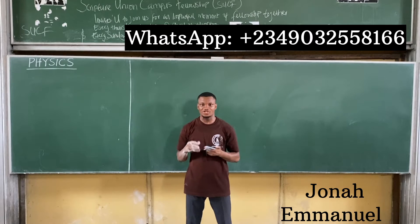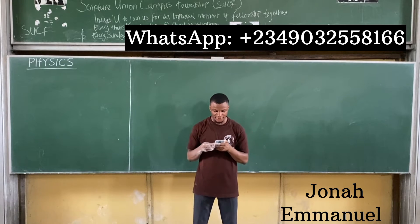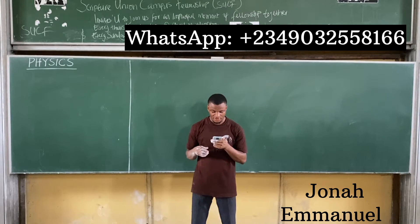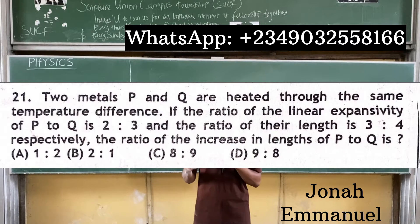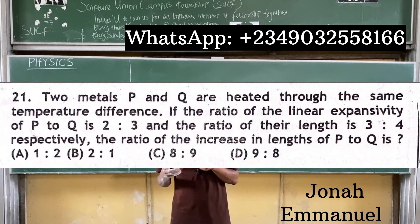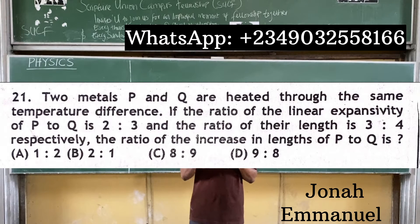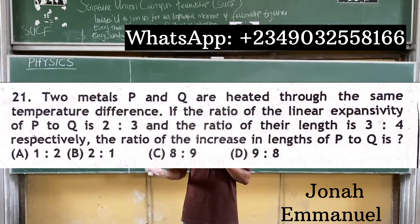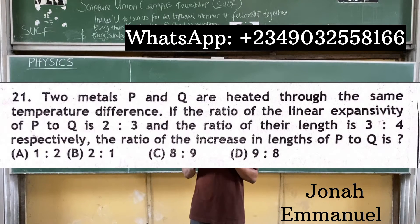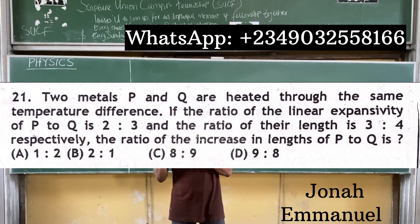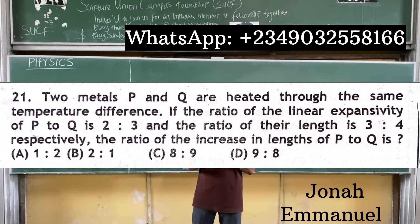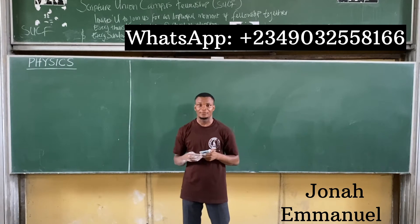Let's look at this JAM question on linear expansivity. The question says two metals P and Q are heated through the same temperature difference. If the ratio of the linear expansivity of P to Q is 2:3, and the ratio of their lengths is 3:4 respectively, find the ratio of the increase in length of P to Q.